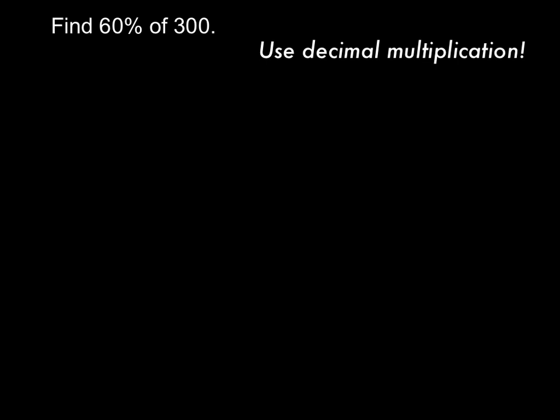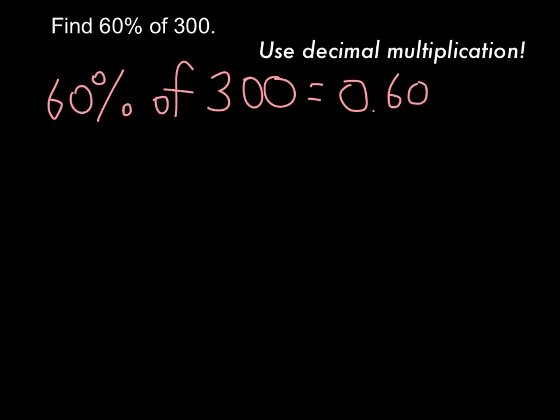But another way we did the same problem, 60% of 300, is to use decimal multiplication. Let's just write out a little bit of how we would do that. We want 60% of 300, and we would turn that into, well, first off, we've got to convert that into a decimal. So 60% as a decimal is 0.60, and we would multiply times the 300.